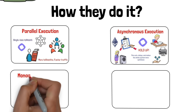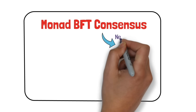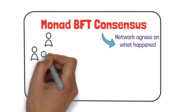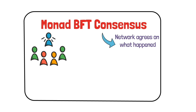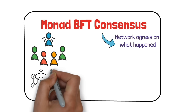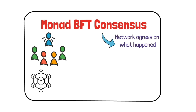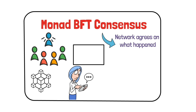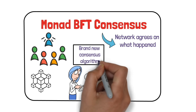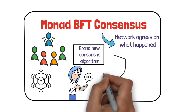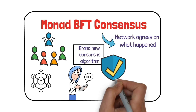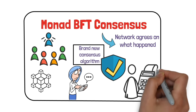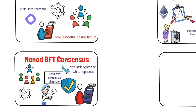Third, Monad BFT consensus. Consensus means the network agrees on what happened — it's like everyone in a group chat agreeing on the order of the messages. Most blockchains use lots of back and forth to stay in sync, and that adds time. Monad BFT is a brand new consensus algorithm that reaches agreement faster and with less chatter, while staying totally secure. The result? Faster finality — meaning your transactions are confirmed quickly and can't be changed.